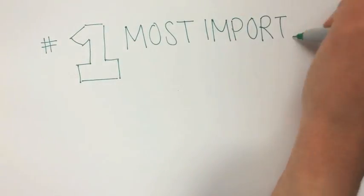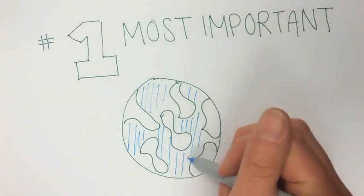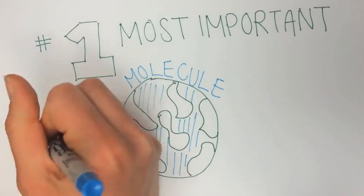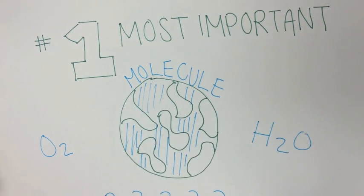If I had to give one molecule the title of the most important molecule on the planet Earth, it would probably be a toss-up between oxygen and water. Both molecules are critical to life as we know it.